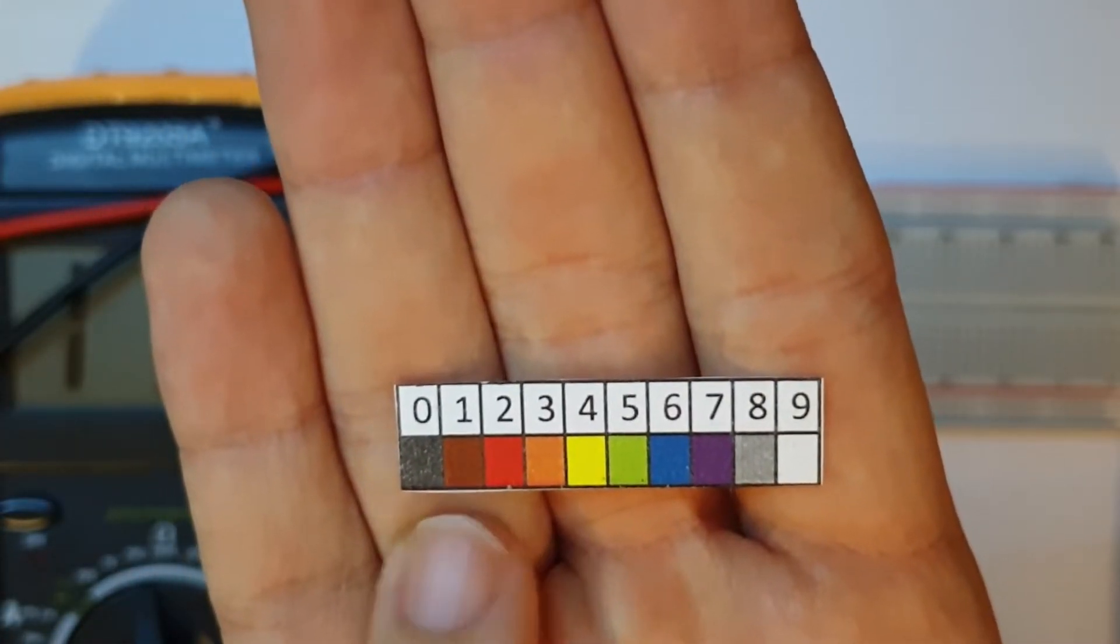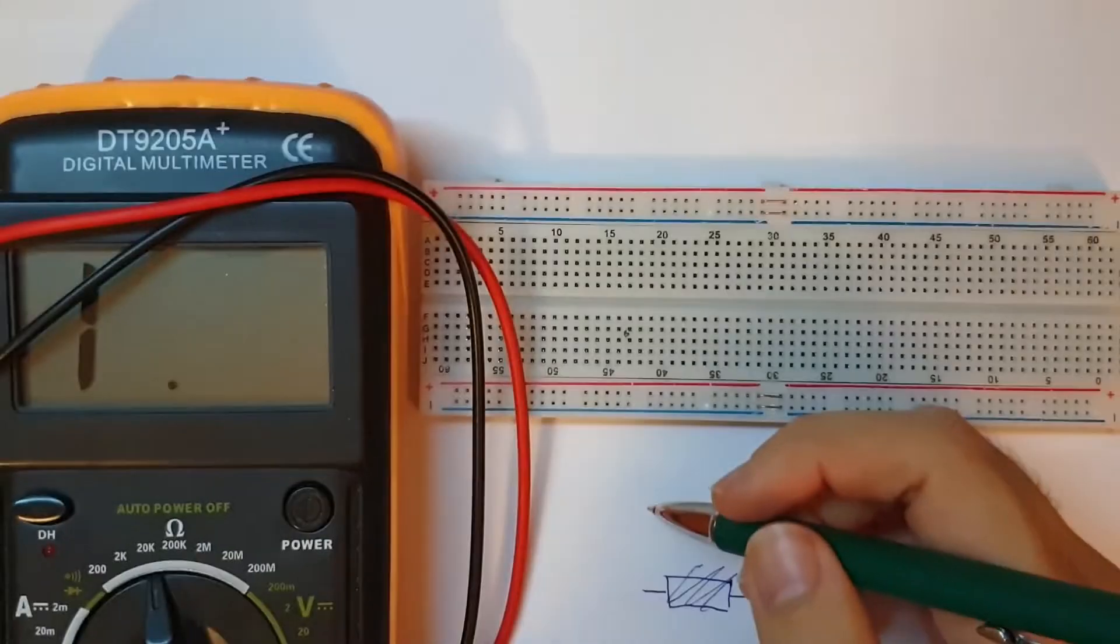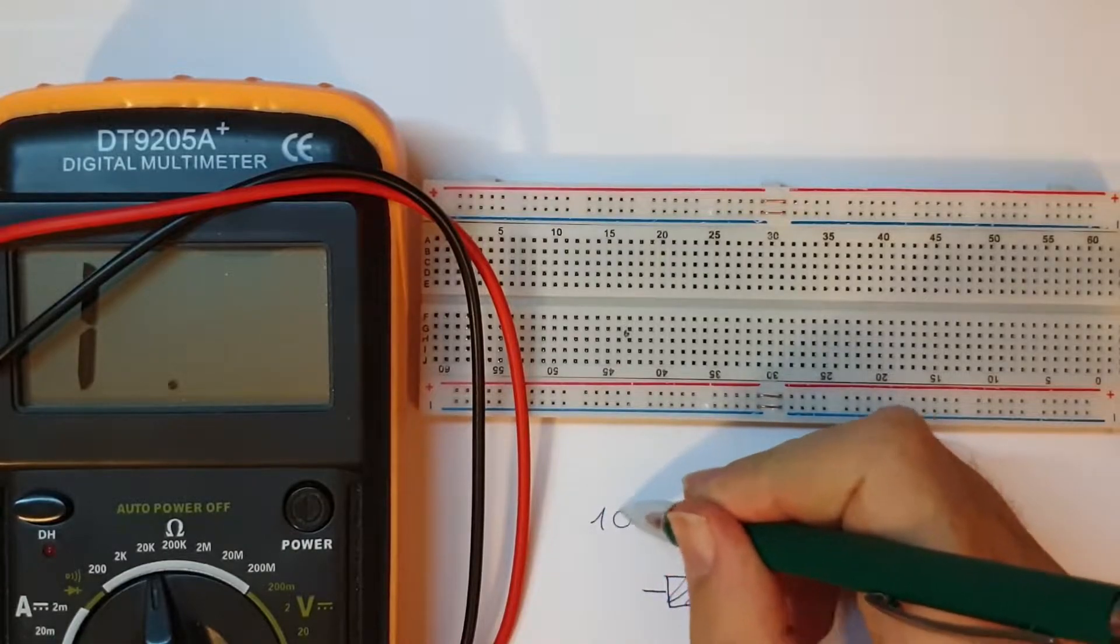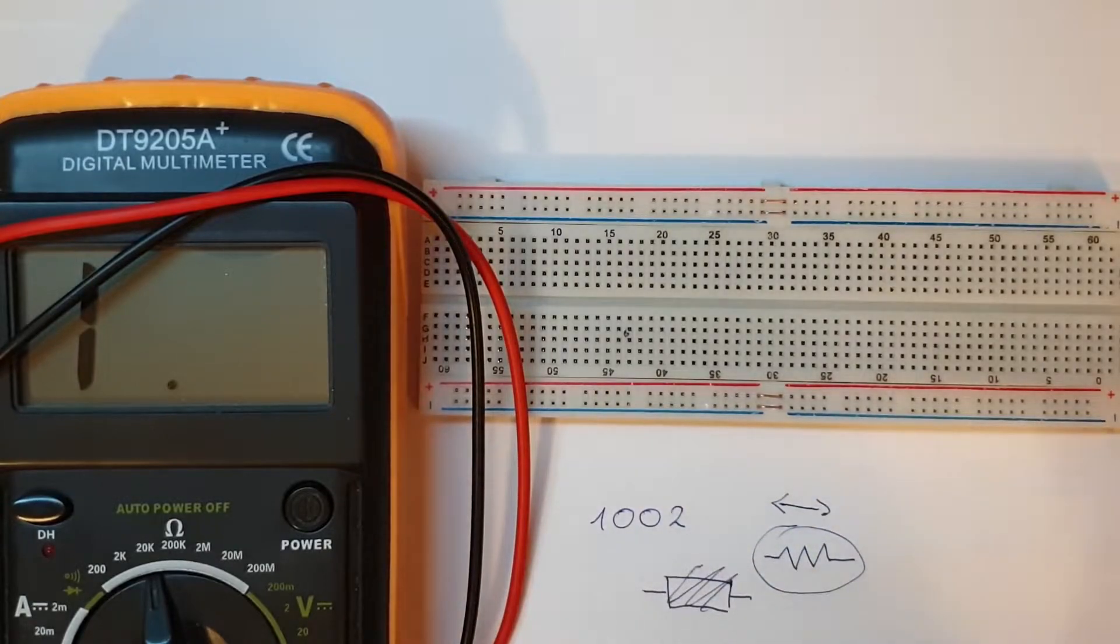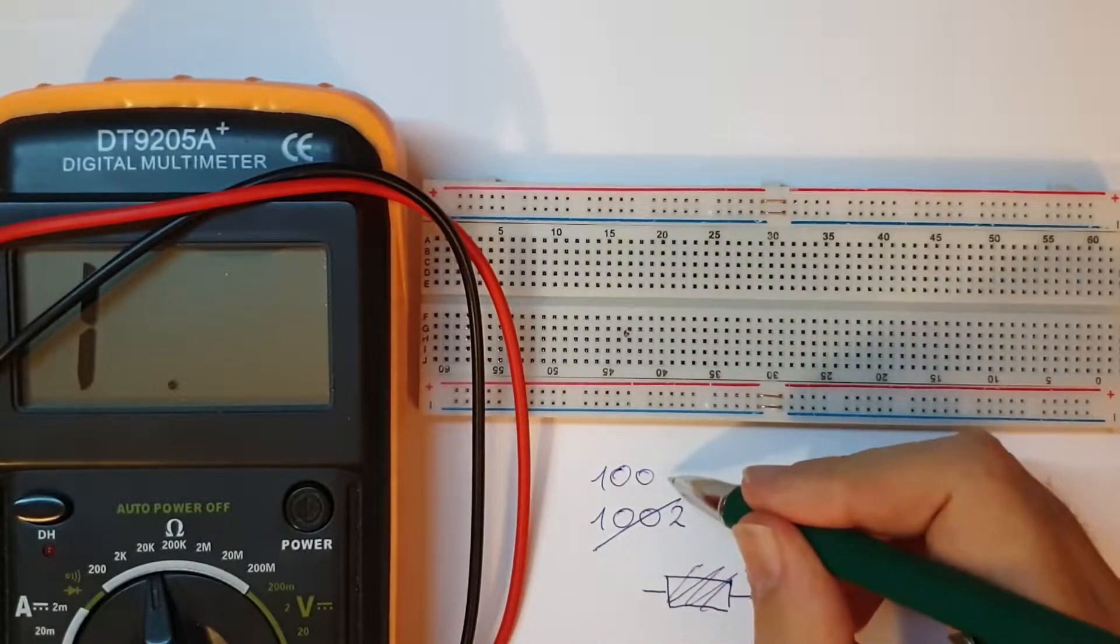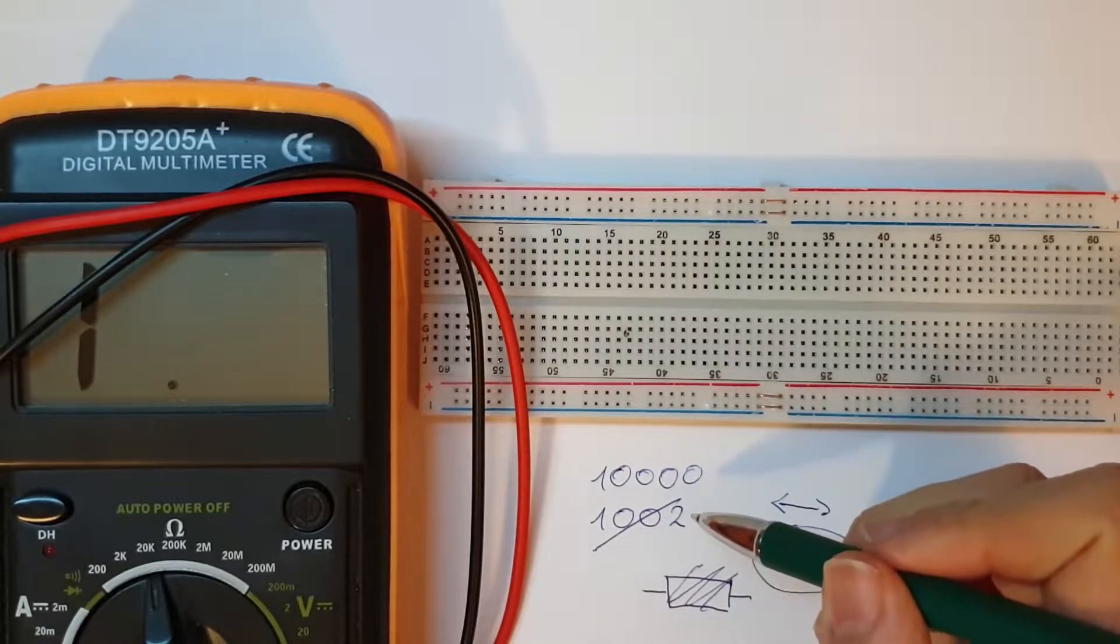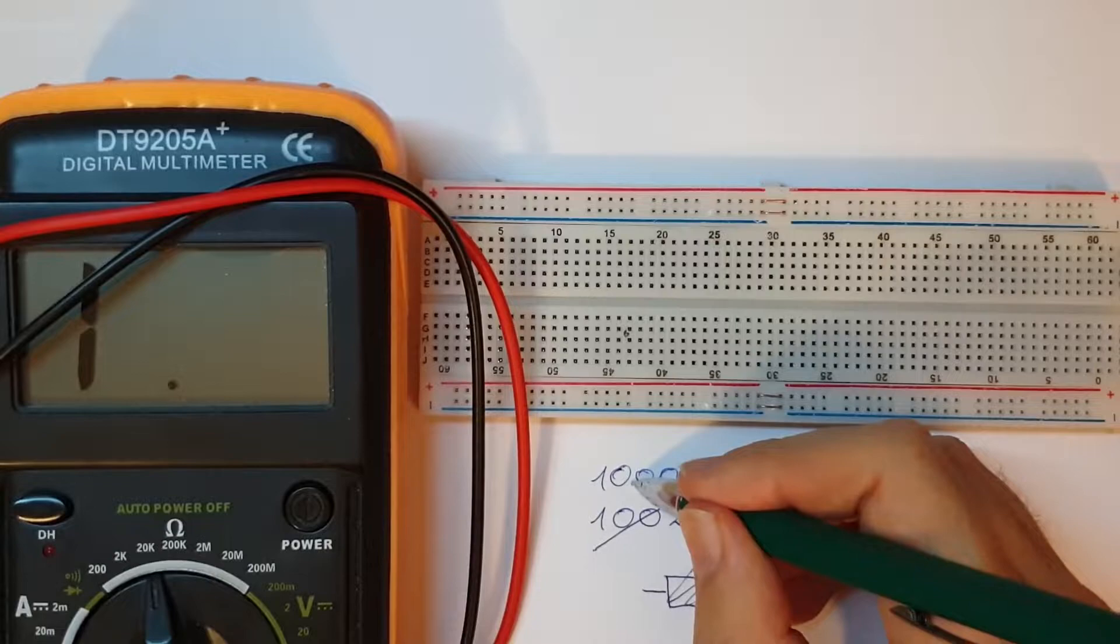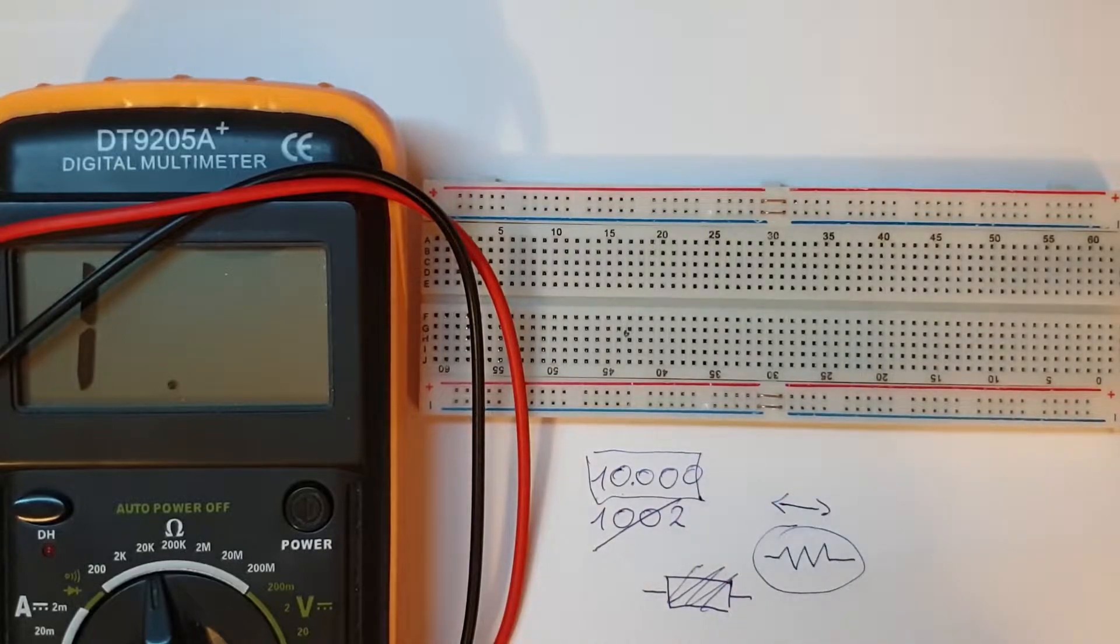Brown, black, black, red means one, zero, zero, two. This means one hundred and two zeros. So, the third band always means number of zeros. So, we get ten thousand. The value of our resistor is around ten thousand. Very good.